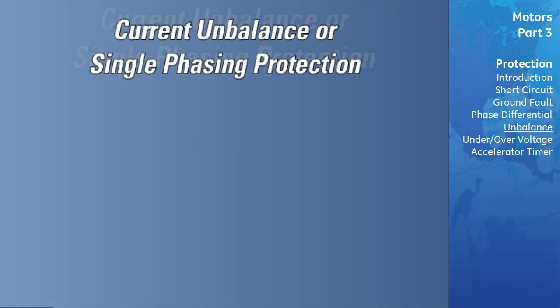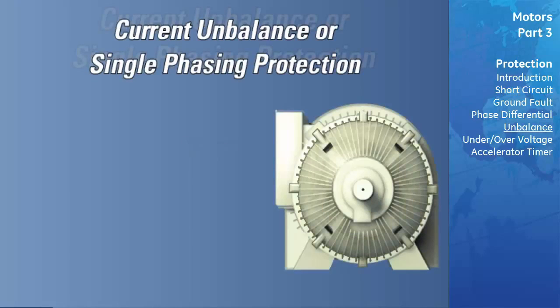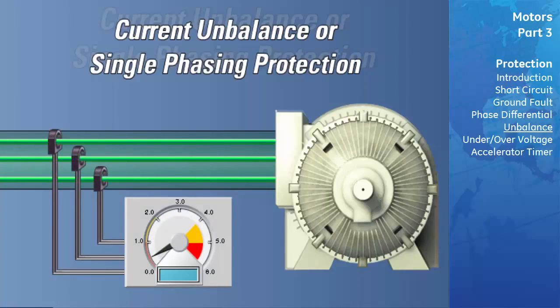Current Unbalance or Single Phasing Protection. The contribution of current unbalance to thermal capacity was covered earlier. Here, the magnitude of the current unbalance is used to detect and trip the motor if a single phase condition occurs. Single phase refers to the situation when one of the three phases is no longer being supplied to the motor. If enabled, a trip and/or alarm occurs once the unbalance magnitude exceeds the current unbalance trip pickup for a period of time specified by the current unbalance alarm trip delay.